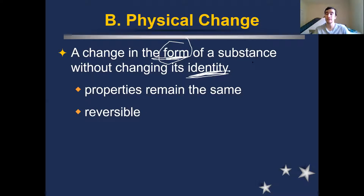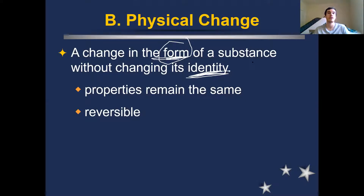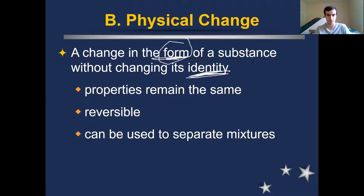Physical changes are usually reversible, meaning that if we took that iron and cut it all up into pieces, we could keep those pieces and glue them back together. Or if you took a piece of paper and put it through the paper shredder, you'd have a bunch of little pieces of paper that you could, if you really wanted to, tape all back together and reconstruct that sheet of paper. You can also use physical changes to separate mixtures — if you have two different liquids that boil at different temperatures, you could heat them up and eventually one would boil away while the other would still be there.